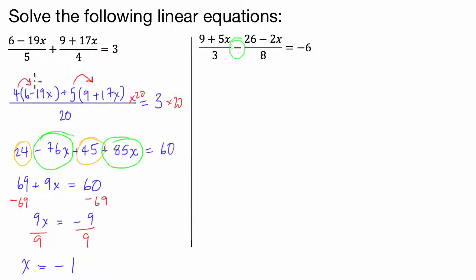So what we're going to do, like we did with the other one, we're going to put them all on the same base. So three-eighths are 24, so I'm just going to draw a nice long fraction again. We've got 24 in the base, in the denominator. Three times eight is 24, so I'm going to have eight outside 9 plus 5x, minus eight times three, so I've got three outside 26 take 2x, and that's equal to negative six.